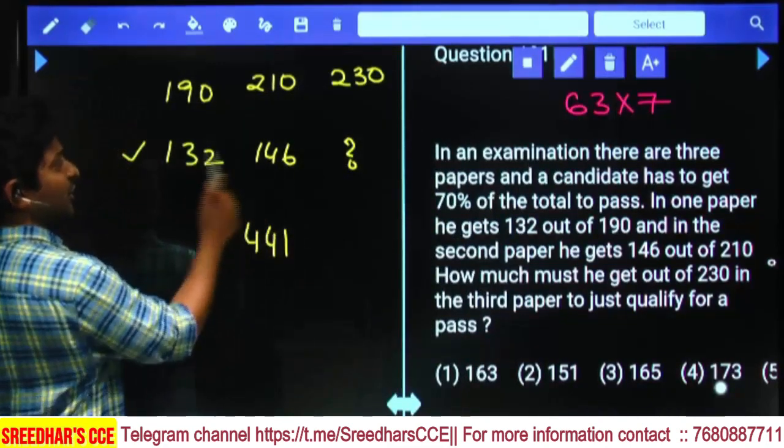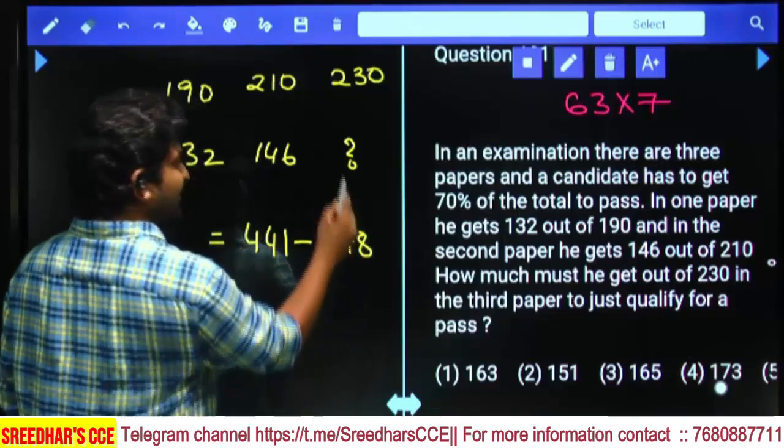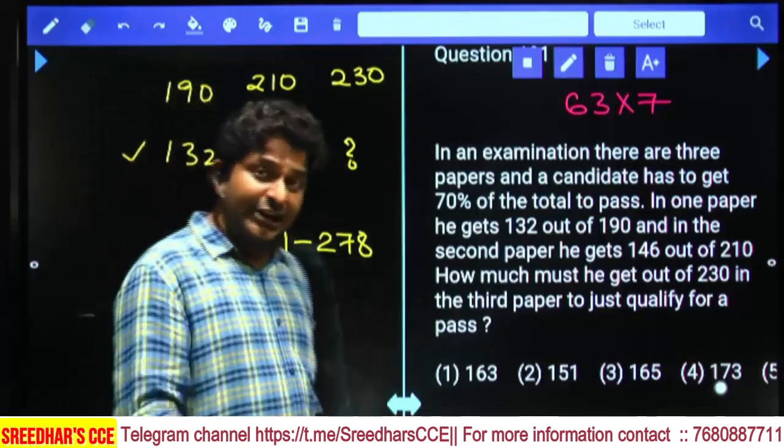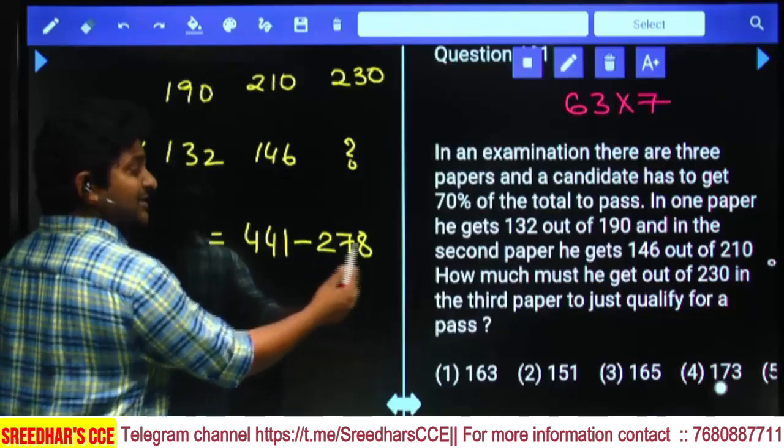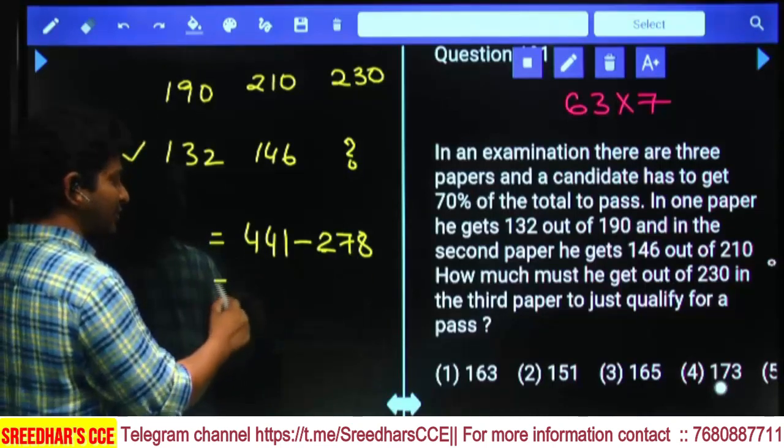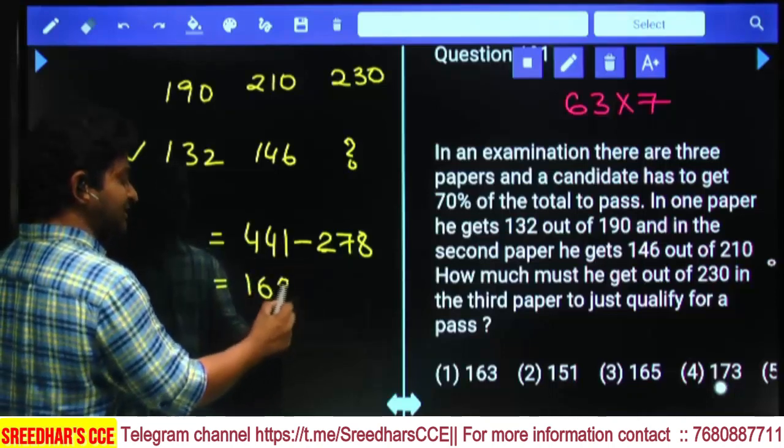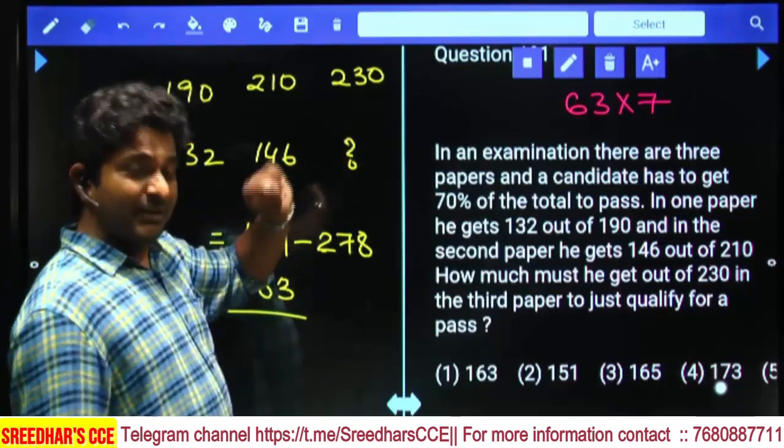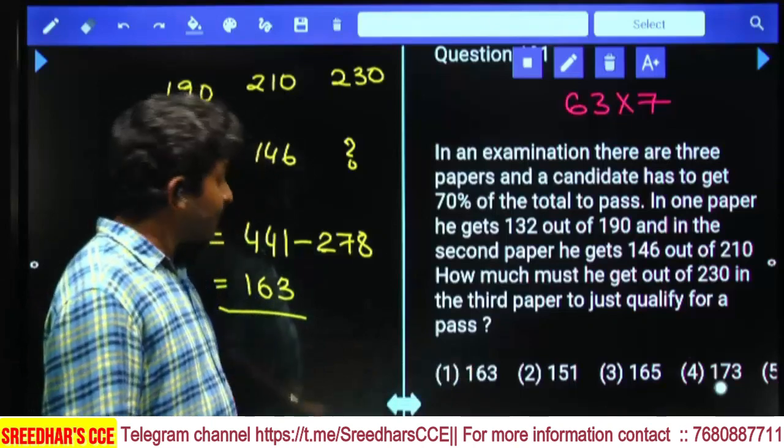Already he scored 278. If you subtract 278 we will get the number of marks required in the third paper to pass the examination. This is 22 less than 300 and this is 141 more than 300. 141 plus 22 equals 163. You need to score 163 marks in the third paper to pass. First option.